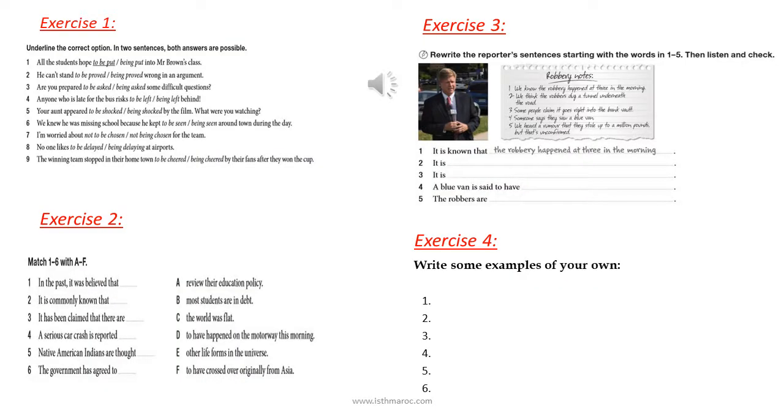Exercise one: underline the correct option. It is known that the robbery happened at three in the morning. It is thought that the robbers dug a tunnel underneath the road. It is claimed that it goes right into the bank vault. Match one to six with a to f. A blue van is said to have been seen. Listen carefully to the recording and fill in or continue the sentence. The robbers are rumored to have stolen up to a million pounds, but that's unconfirmed.